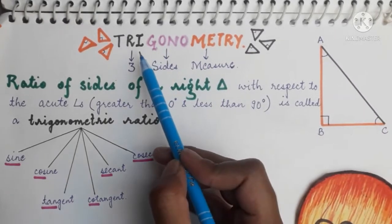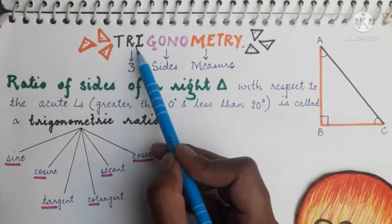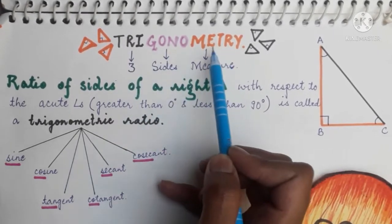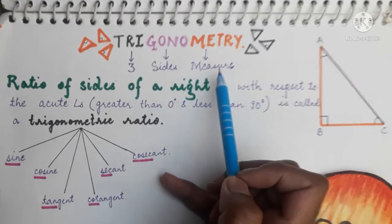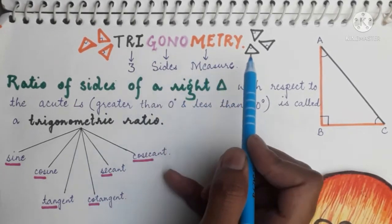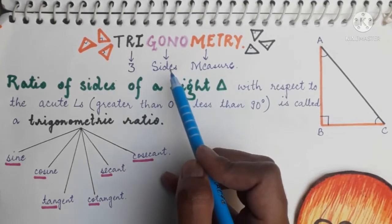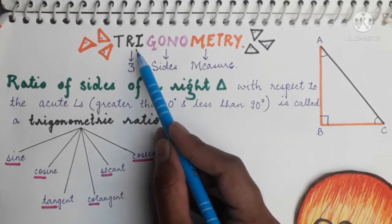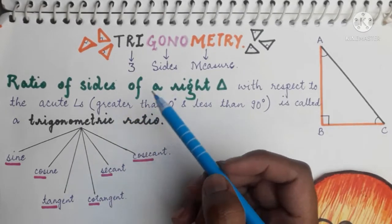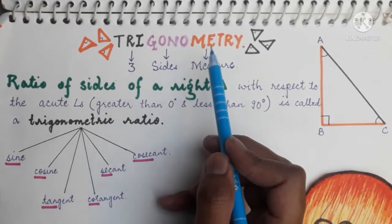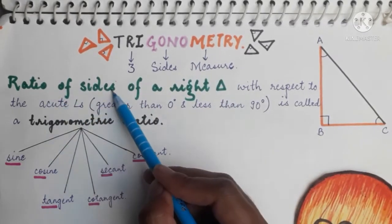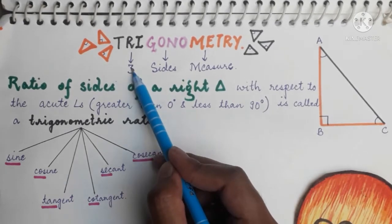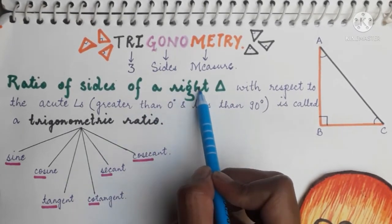Let's begin with the meaning of the word trigonometry. 'Tri' means three, 'gun' means side, and 'metry' means measure. So basically, using trigonometry we can find the ratio of the sides of a triangle. Trigonometry is all about measuring the ratio of sides of a triangle.